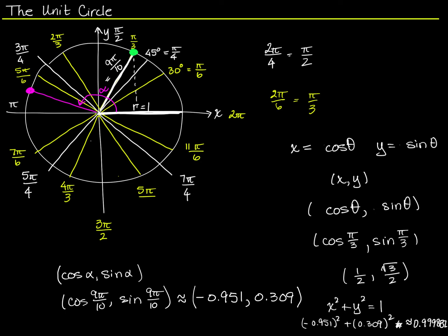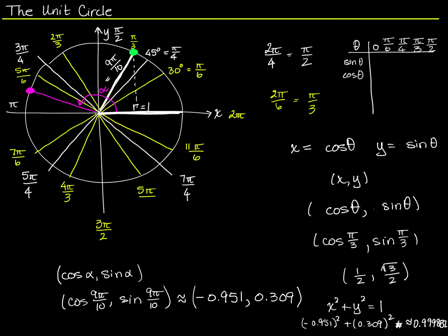That's pretty much it for the unit circle. You don't have to memorize these values, though I know a lot of you will probably try. Remember that your first quadrant contains 0, pi over 6, pi over 4, pi over 3, and pi over 2. Those correspond to the values in the table we've been working on. Once you have the sine and cosine for these values, you can also find the tangent because the tangent is just the sine value divided by the cosine value.